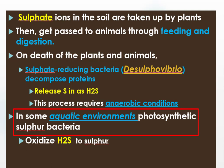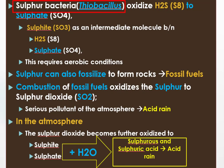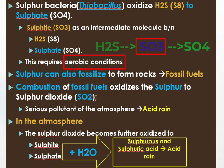Then, in some aquatic environments, photosynthetic sulfur bacteria are capable of oxidizing hydrogen sulfide to sulfur. And sulfur bacteria, mainly of the genus Thiobacillus, then oxidize hydrogen sulfide or sulfur to sulfate, with sulfate as an intermediate product. This is an oxygen-requiring process that needs aerobic conditions and makes sulfate ions available once again to be taken up by plant roots from the soil.